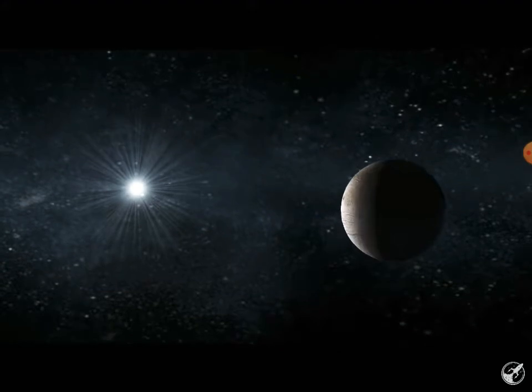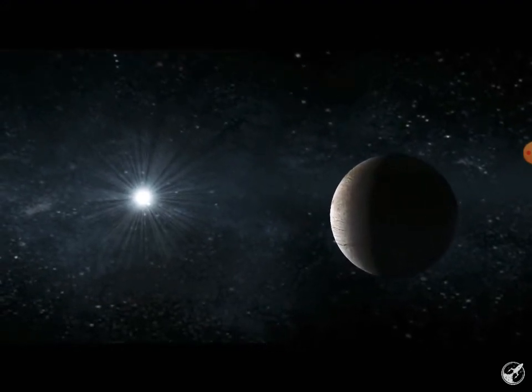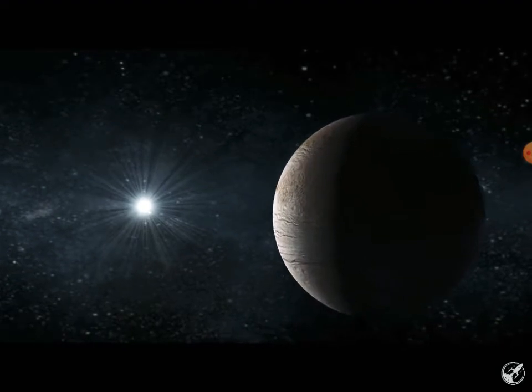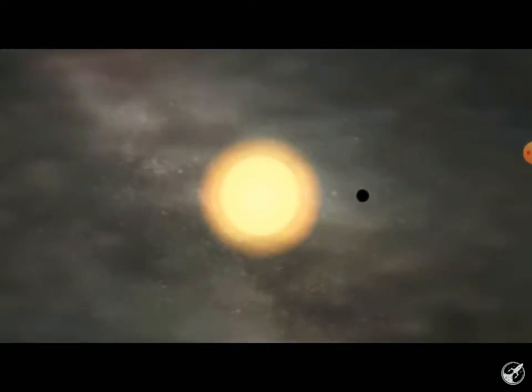Follow-up observations on the ground and from the Spitzer Space Telescope confirm the planet's existence. Kepler-22b, the first Earth-sized planet found by Kepler in a habitable zone around another star, has been confirmed.